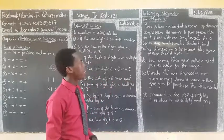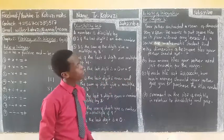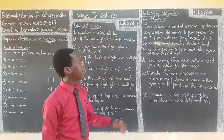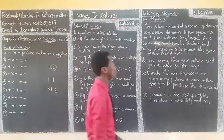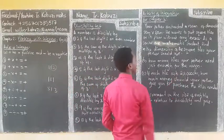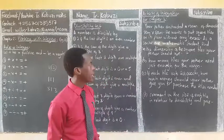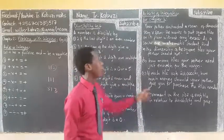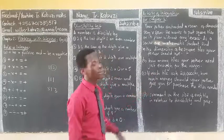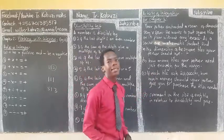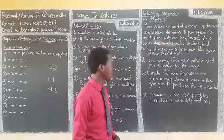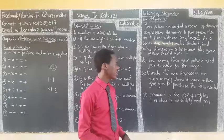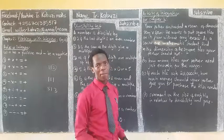How many tiles does your father need, just enough for the room? You need to find the number of tiles your father needs. If each tile costs 20,000 shillings, how much money should your father give you to purchase the tiles? After knowing the number of tiles, you need to know the total price. Also consider the size of each tile in relation to durability and the price.